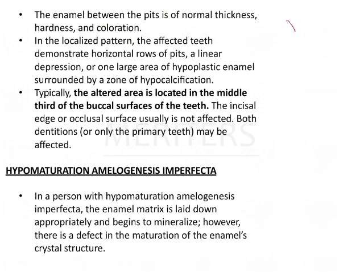If this is your labial surface, the enamel on either side of a pit is of normal thickness, while the pit itself is a depression. In the localized pattern, the affected teeth demonstrate horizontal rows of pits, a linear dispersion, or one large area of hypoplastic enamel. The altered area is located in the middle third of the buccal surfaces of the teeth — this is an important point.